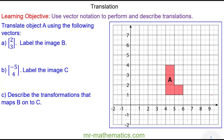Hello and welcome to our lesson on translations. In this lesson we're going to use vector notation to perform and describe translations. Vector notation describes a horizontal and a vertical movement. When the number on top is positive we move to the right; when it is negative we move to the left. When the number below is positive we move up; when it is negative we move down.